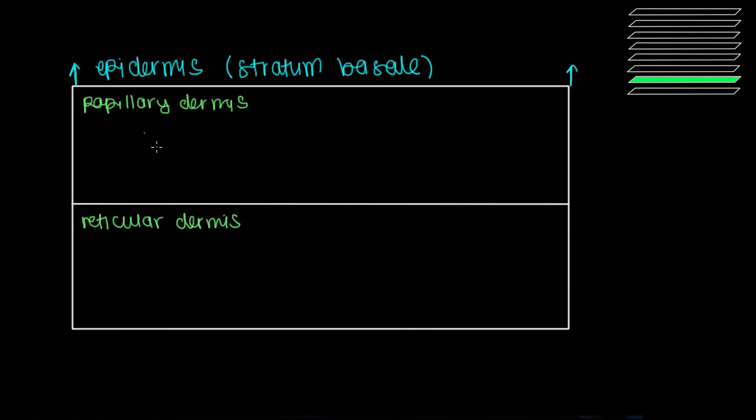And the main difference between the dermis versus the epidermis is the type of tissue we have here. Recall that in the epidermis, we had epithelial tissue. And then within the dermis, both layers are going to have something that's called connective tissue. And you've probably seen that written out as CT, connective tissue.